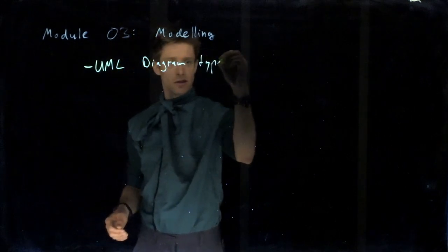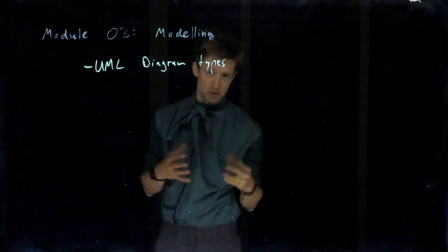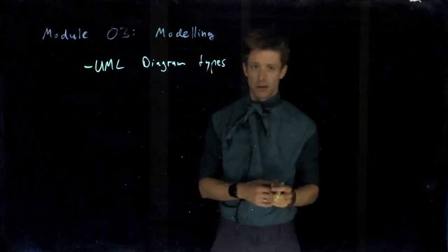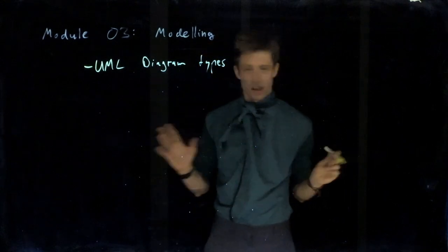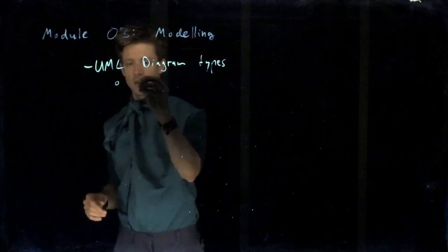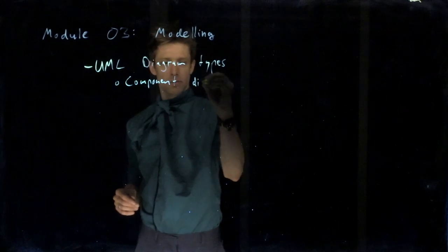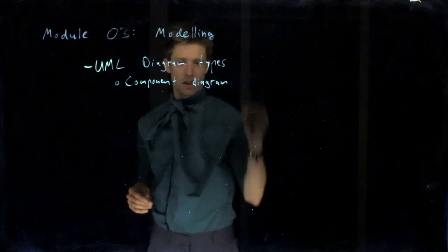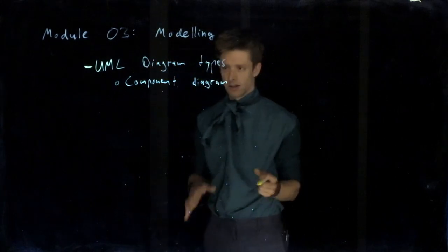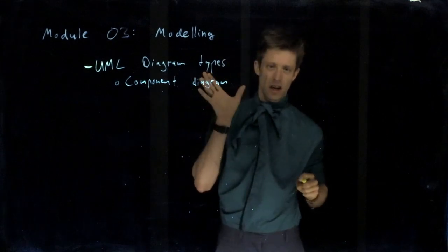This course assumes that you already have knowledge in that, so it's really just a quick recap of the different options. In particular, one thing that we will discuss because it's often skipped is the UML component diagram, which is a really important diagram for example for architecture description. That's why it's important to look at it.